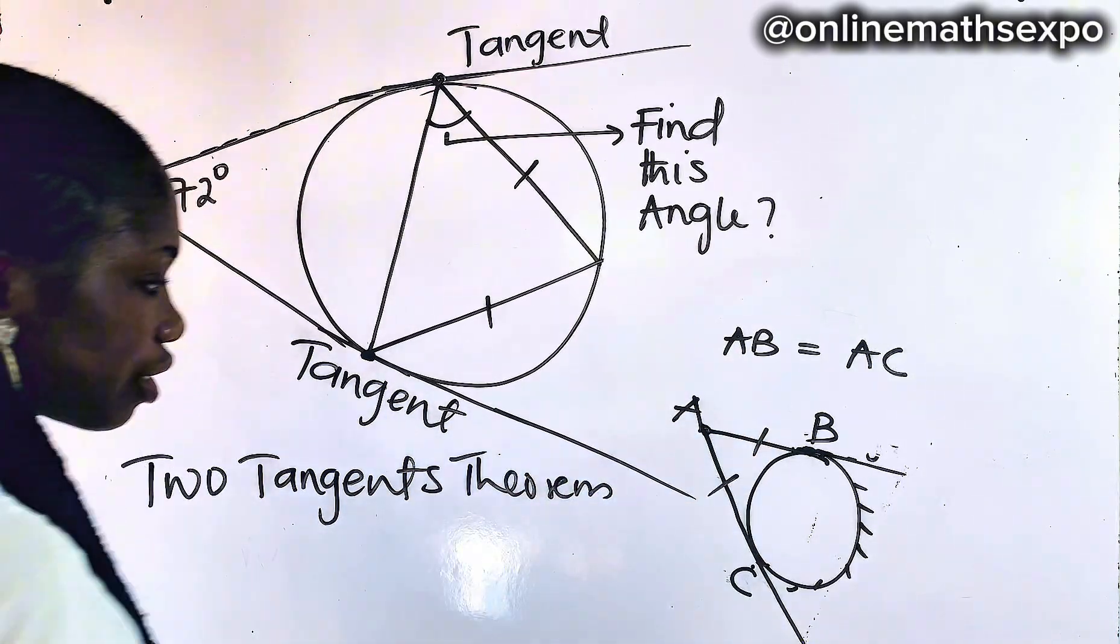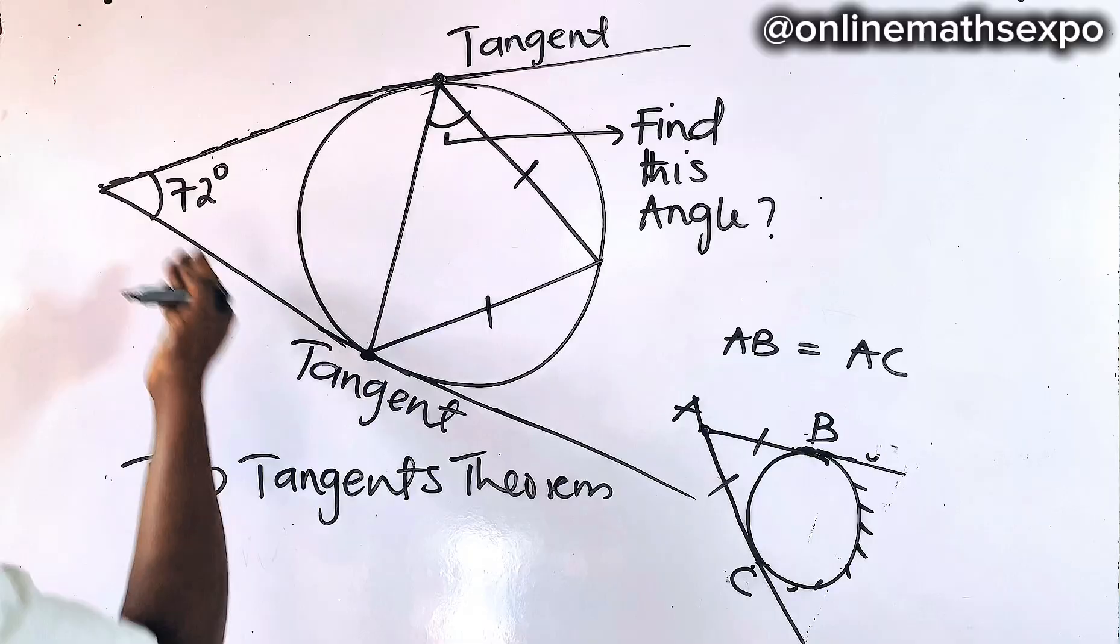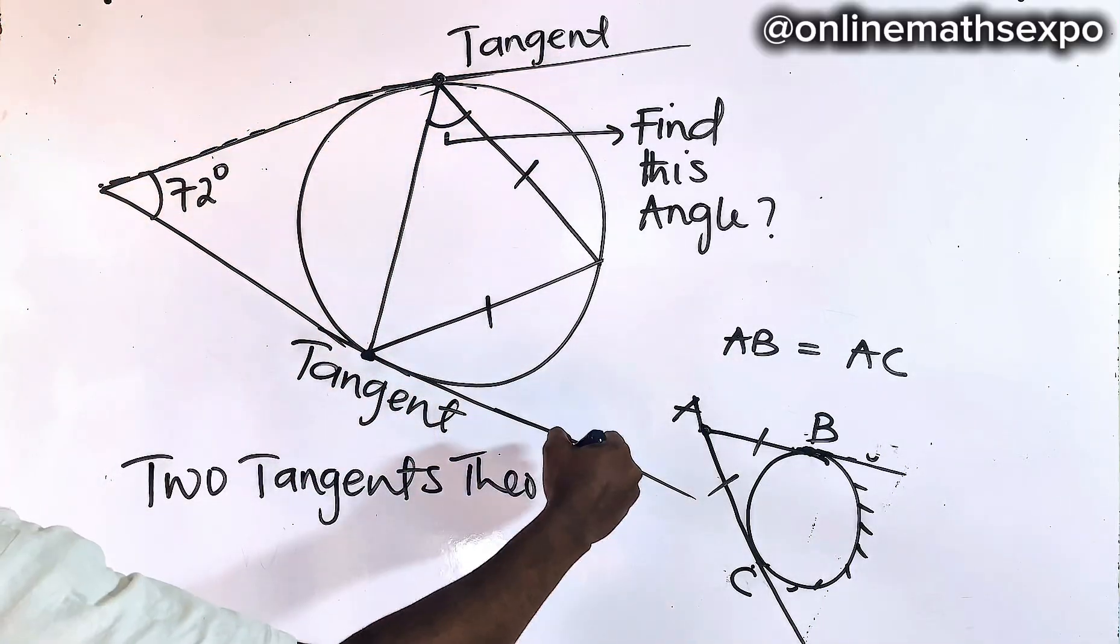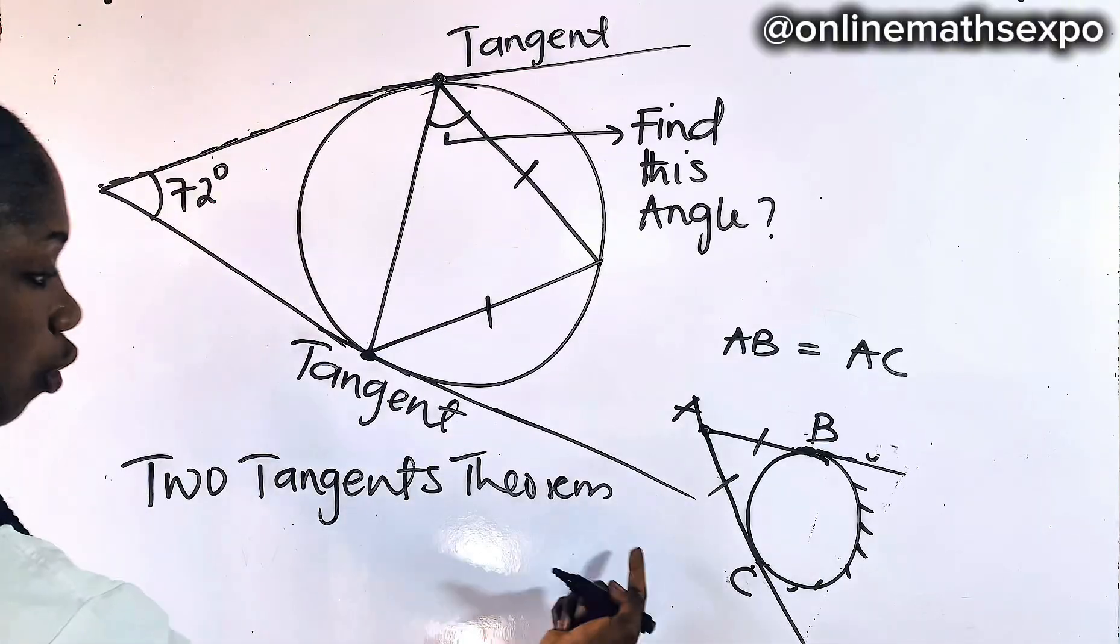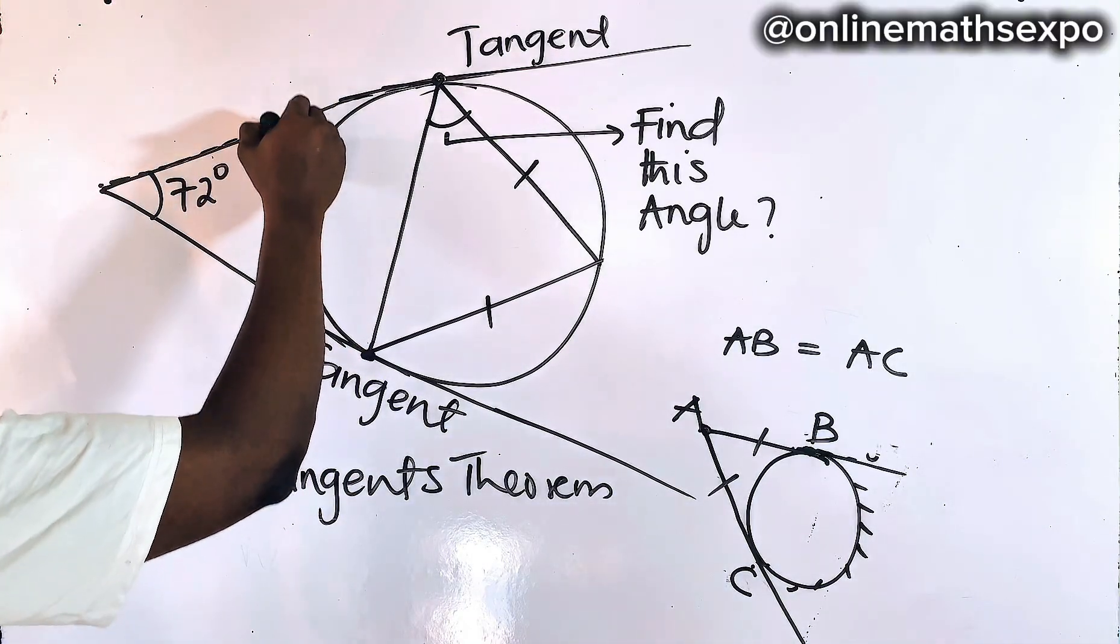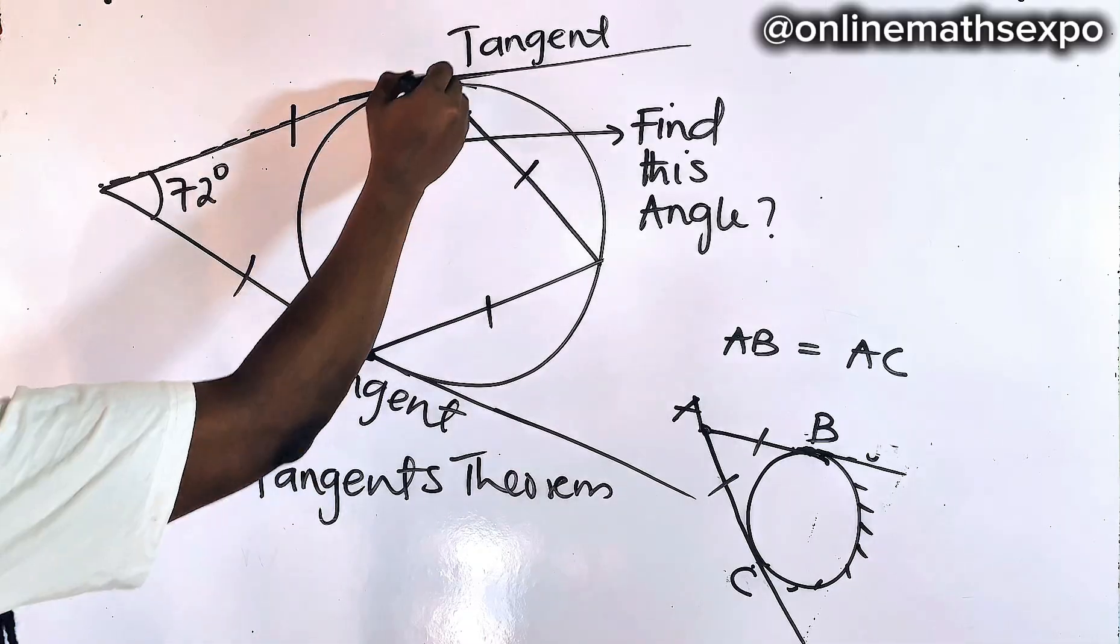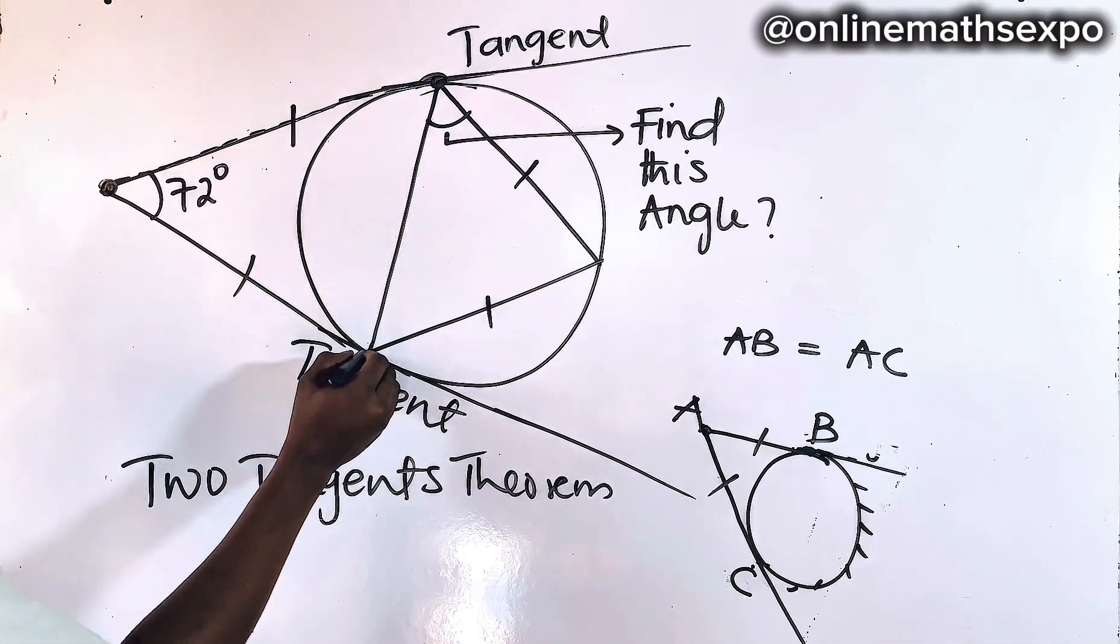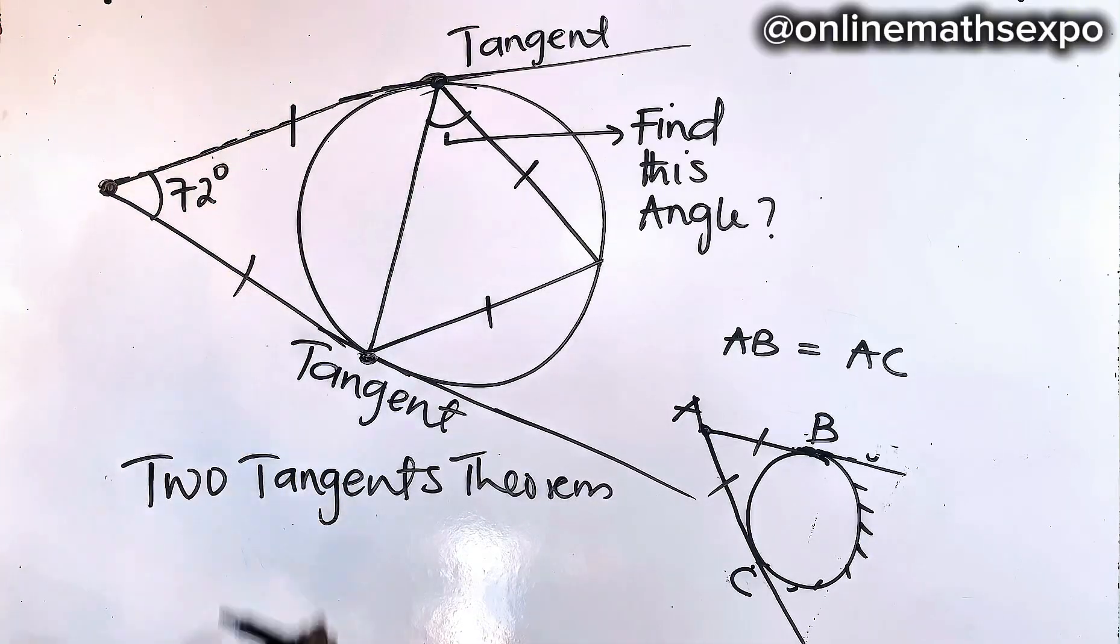So with this, you have identified. Go back to the diagram. You see that this is tangent and this is tangent. So obeying the two tangent theorem, you observe that this and this are the same. From here to this point is the same as from here to this end.